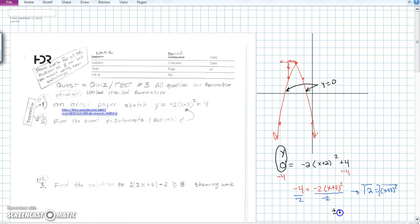Positive and negative square root of 2 equals x plus 2. Subtract 2 from both sides, and x equals negative 2 plus or minus square root of 2.